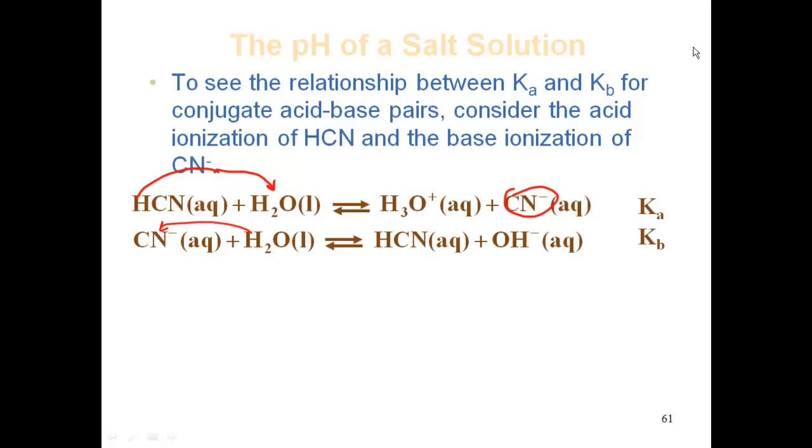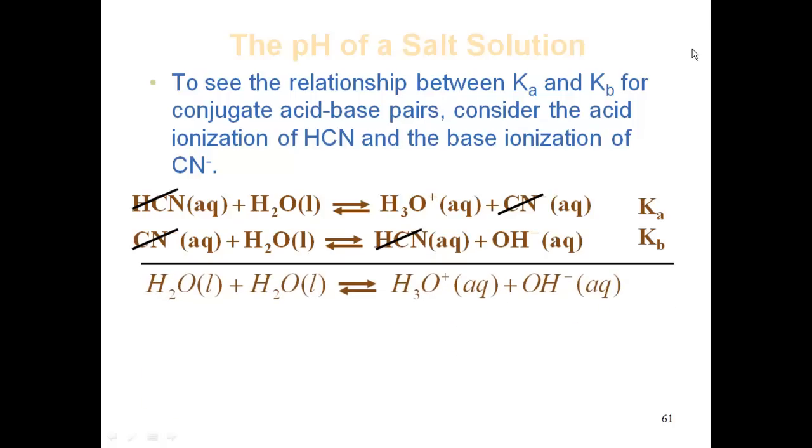Now if we go ahead and take these two reactions and add them up, what's going to happen? Well first off you're going to notice that HCN is on both sides, so they cancel out. You also notice that CN- is on both sides, so that cancels out. So if I add the two equations together, what do we get? Water plus water gives me hydronium ion plus hydroxide ion. Does that equation look familiar? Do you recognize that equation?